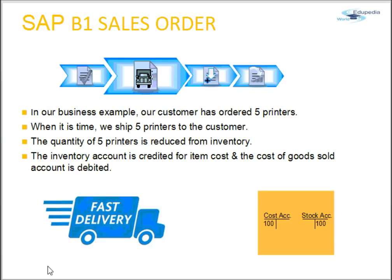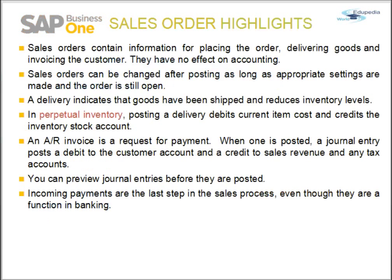If the delivery is based on a sales order, the committed quantity from that order is also reduced. A delivery records that goods have been shipped; this document is sometimes referred to as a packing slip or delivery note. The effect of this delivery is that the inventory account is credited for the item cost and the cost of goods sold account is debited. If you have multiple sales orders to deliver to one customer, you can open a blank delivery, add the customer name, and use Copy From to select the list of sales orders or quotations for that customer.